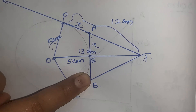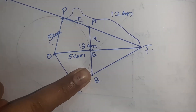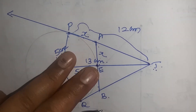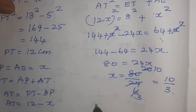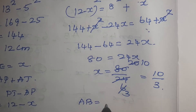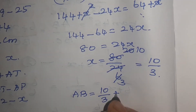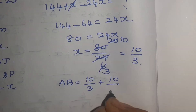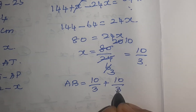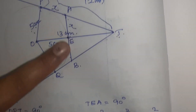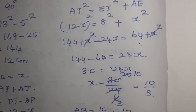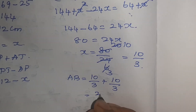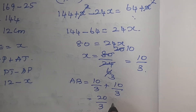So, AB equal to AE plus EB. Since the perpendicular from the centre bisects the chord, AE equal to EB. So AB equal to 10 by 3 plus 10 by 3 — because the angle is 90 degree, it bisects. So, 10 by 3 plus 10 by 3 that is equal to 20 by 3. AB equal to 20 by 3 centimetre.